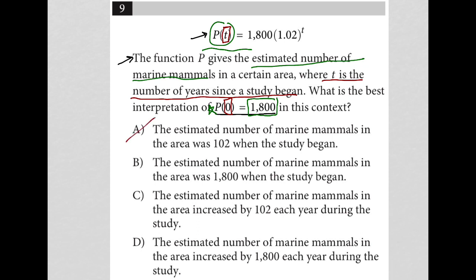Choice B, the estimated number of marine mammals in the area was 1800 when the study began. Absolutely. Right. I think B is definitely the correct answer. I'm going to read the others, but I'm liking B quite a bit.